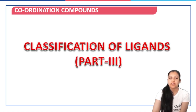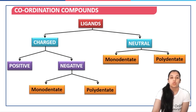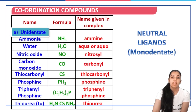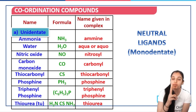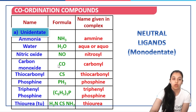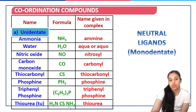Next, classification of ligands Part 3. We now discuss monodentate and polydentate neutral ligands. For monodentate neutral ligands: ammonia has one nitrogen donor atom; water has one oxygen donor atom; NO has nitrogen; CO has carbon or oxygen depending on context; CS has one donor; phosphine (PH3) has phosphorus; triphenylphosphine has phosphorus; and thiourea — though it has two nitrogen atoms, those nitrogens are not involved in donation, so it acts as monodentate.